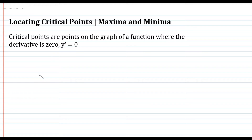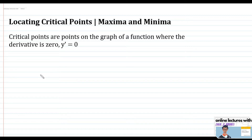Welcome back to another tutorial video in differential calculus. I will discuss locating critical points and the maxima and minima. Critical points are points on the graph of a function where the derivative is equal to zero. So if you get your first derivative and equate it to zero, then you can determine the critical point.